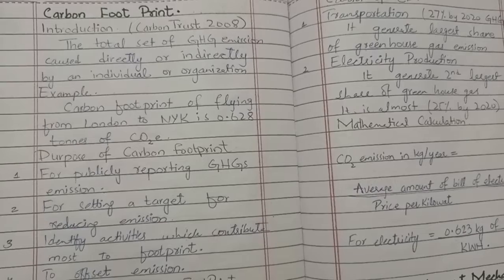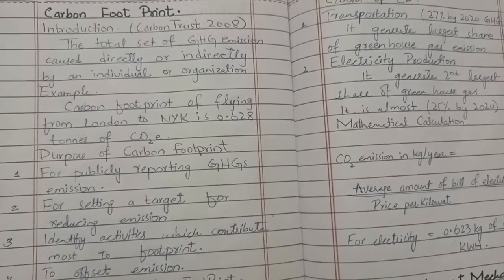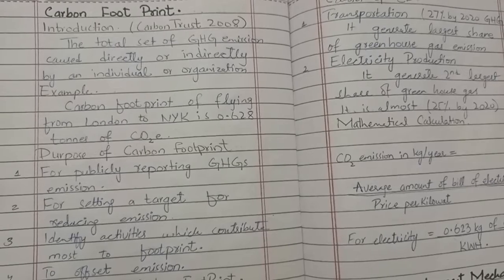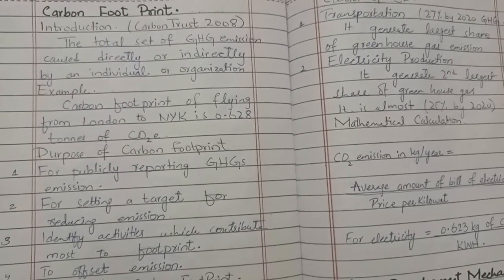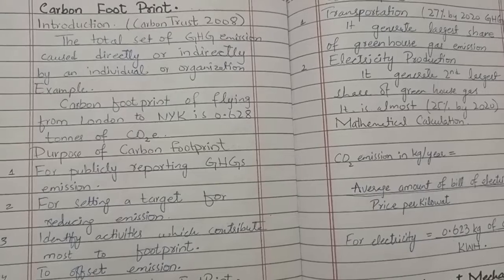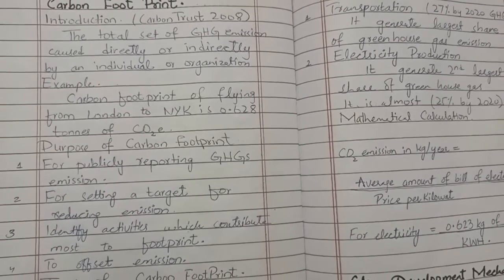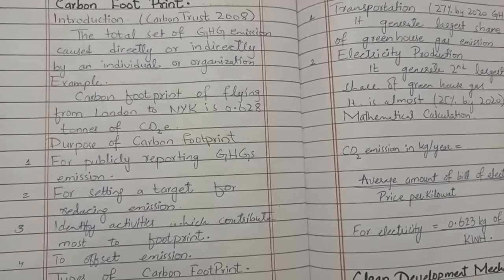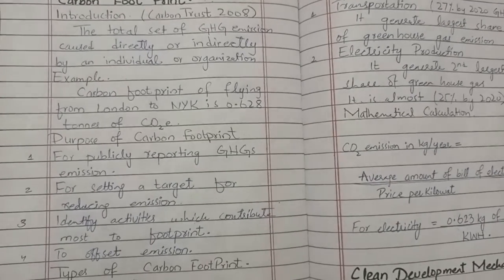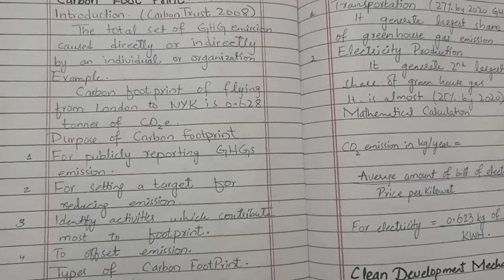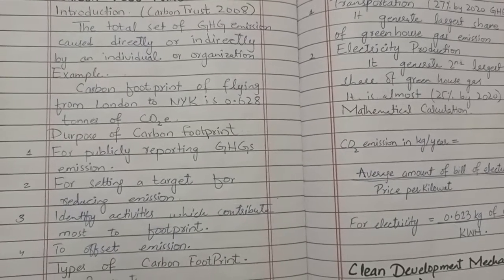Next is an example: the carbon footprint of flying from London to New York is 0.628 tons of carbon dioxide emission. The purposes of carbon footprint are: number one, for publicly reporting GHG emissions; number two, for setting a target for reducing emissions; number three, to identify activities which contribute most to the footprint; and number four, to offset emissions.